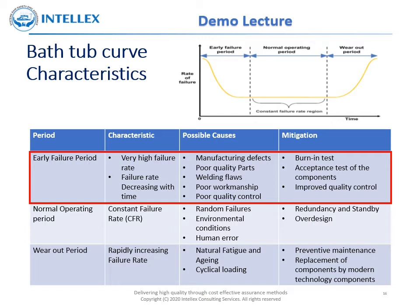The possible mitigations for the early failure period are the burn-in test, which is generally employed in the case of electronic components. Other mitigation factors are acceptance testing of the components and improved quality control.